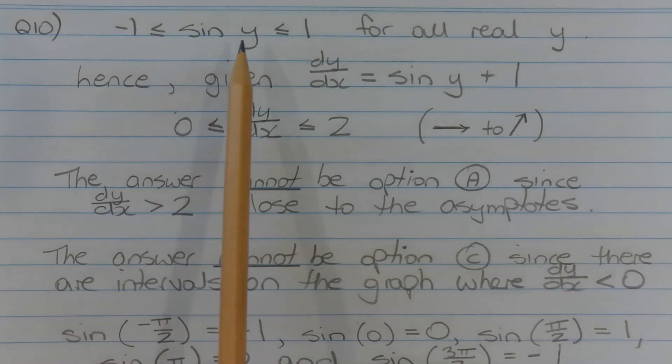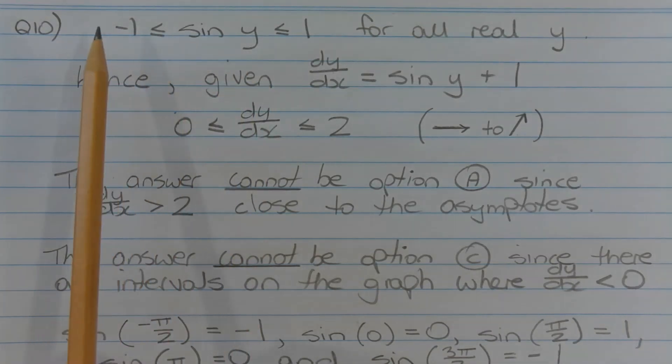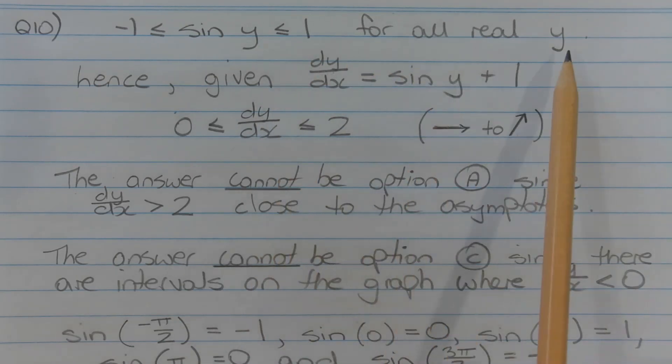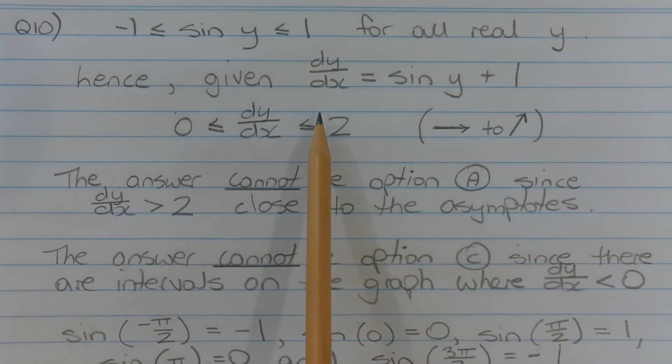The value of sine y must be greater than or equal to negative 1 and less than or equal to 1 for all real y. Hence, given dy/dx is equal to sine y plus 1, the value of dy/dx wherever it is defined must be greater than or equal to 0 and less than or equal to 2.